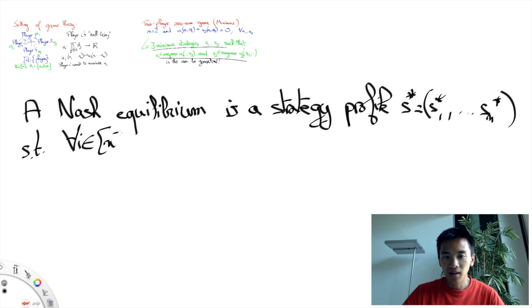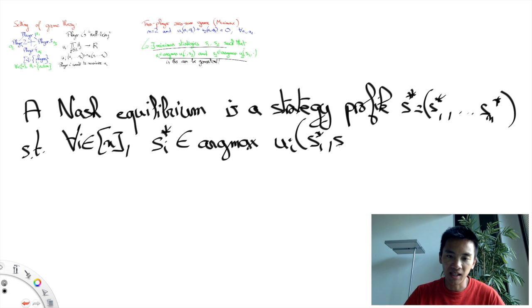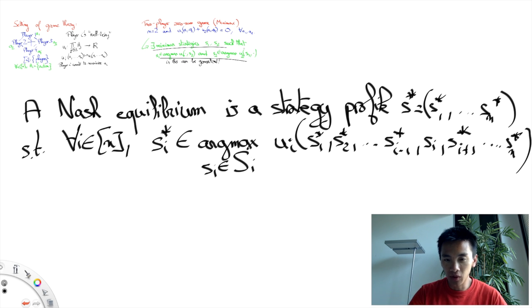the strategy si star is a maximizer of the function that maps his strategy si to the utility where all other players play according to s star, but player i can choose any strategy si that he wants. So in other words, once we fixed the strategies except si to the strategy profile s star the Nash equilibrium, then one of player i's best strategy is si star.